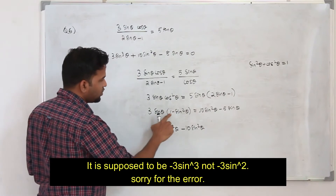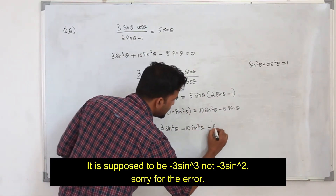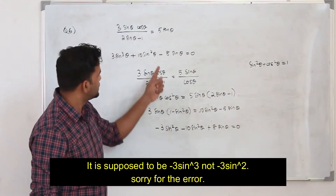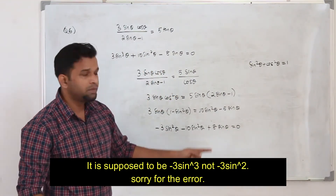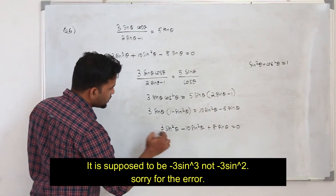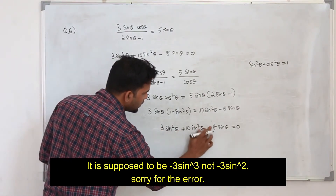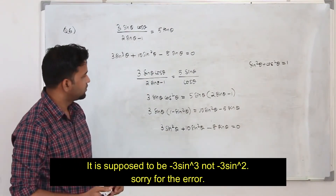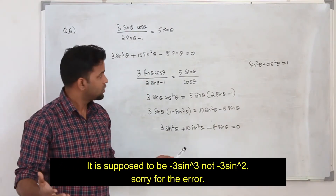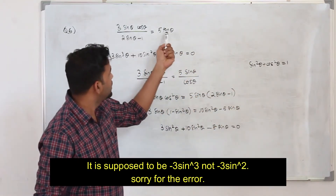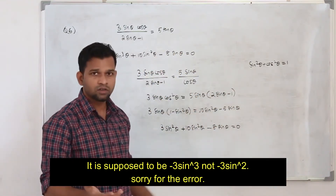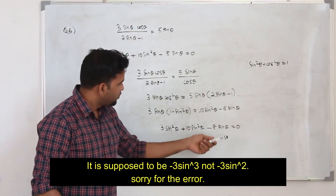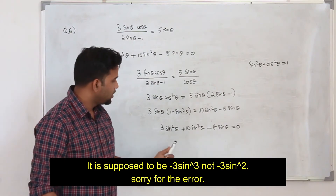Then −3 sin³θ − 10 sin²θ + 8 sin θ = 0. The only thing you need to do is multiply everything by −1, so all terms flip sign. This gives 3 sin³θ + 10 sin²θ − 8 sin θ = 0, which is the required expression. You just need to know the identity sin²θ + cos²θ = 1, and that tan θ = sin θ / cos θ. Replace everything with sin θ, bring to one side, and you have the expression.